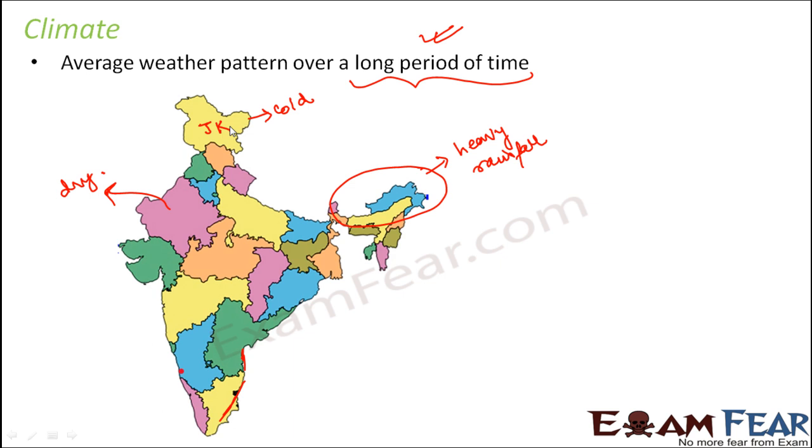For example, the weather pattern of Jammu and Kashmir for every day has been noticed for maybe 20 years or 25 years. And then we have observed that more or less the weather, the climate in Jammu and Kashmir is cold.